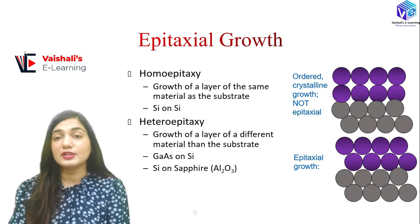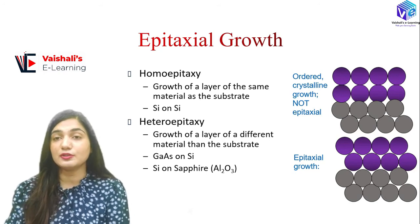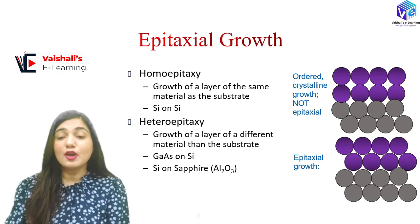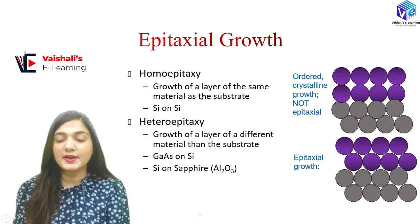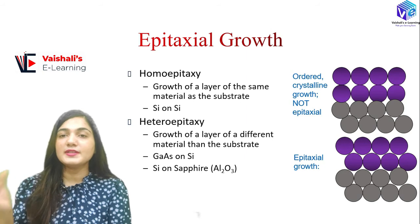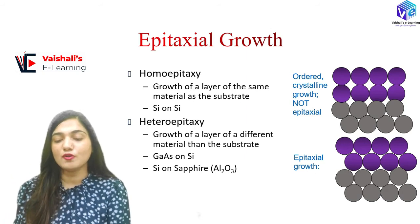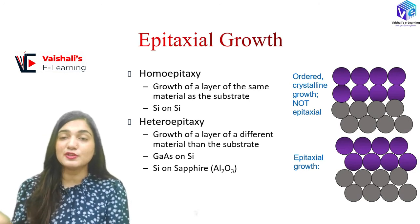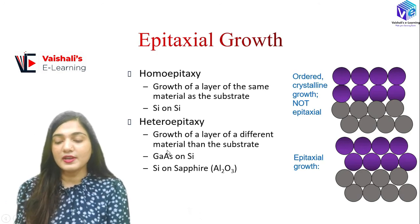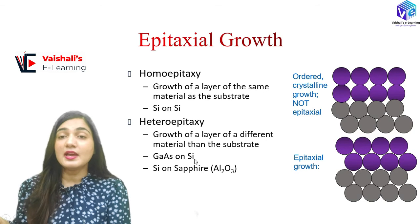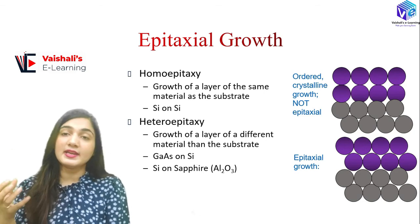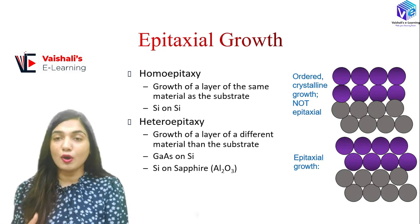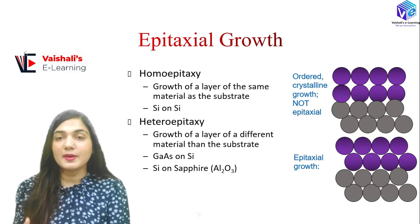There are two types of epitaxial growth: homoepitaxy and heteroepitaxy. In homoepitaxy, we grow a layer of the same material as the substrate — for example, silicon on silicon. In heteroepitaxy, a different material is grown on the substrate — for example, gallium arsenide on silicon, or silicon on sapphire (Al₂O₃). Silicon on sapphire is a very important application for epitaxy and relates to Silicon On Insulator.